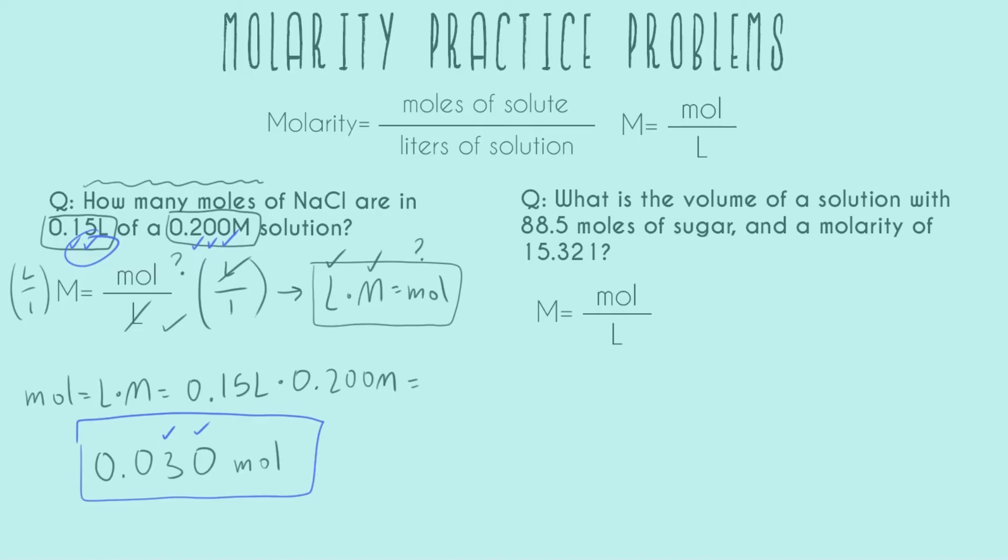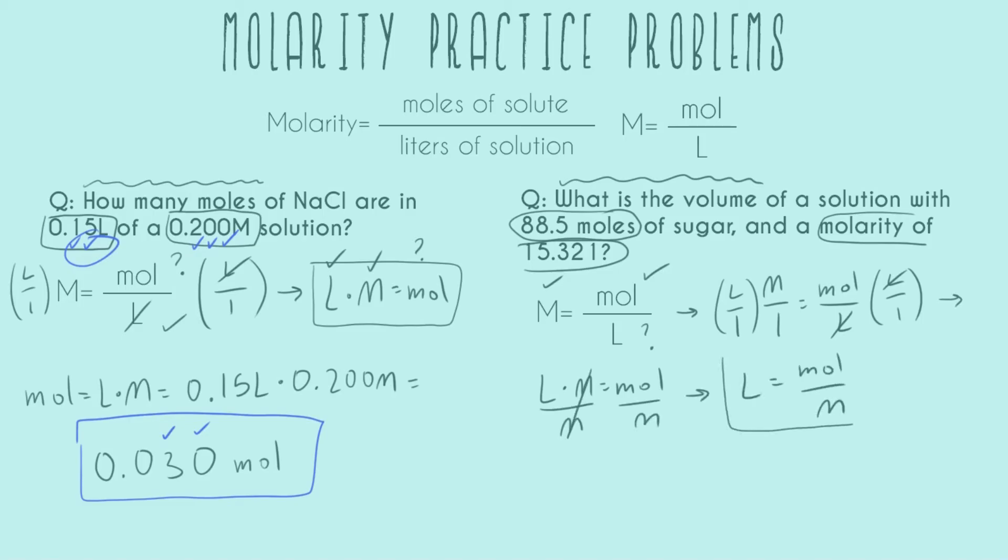We are given the moles, we are given the molarity, and we are asked for the volume. So now I have to rearrange this so I have liters all solved by itself. Getting liters out of the denominator, rearranging, and now getting liters isolated. This is my final formula I'll be plugging into.